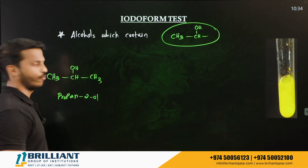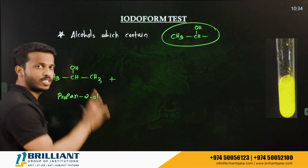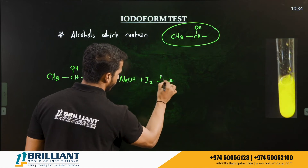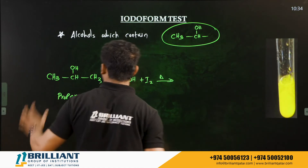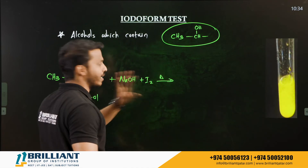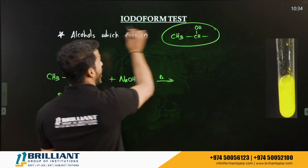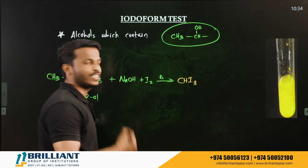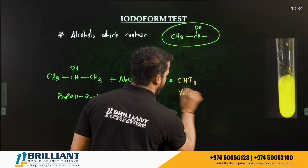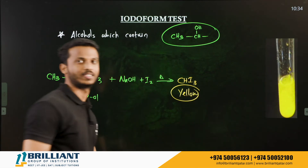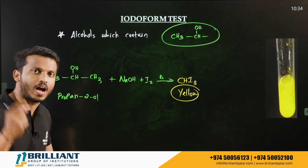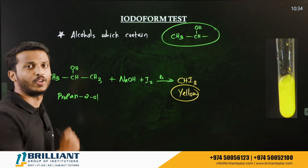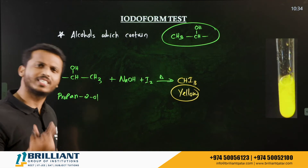The iodoform test involves treating your compound with NaOH and iodine, then heating it. The product formed is iodoform (CHI₃), which has a yellow color. You will get a yellow precipitate. The iodoform test is given by aldehydes, ketones, and alcohols — if it is an alcohol, it must contain the CH₃CHOH group.